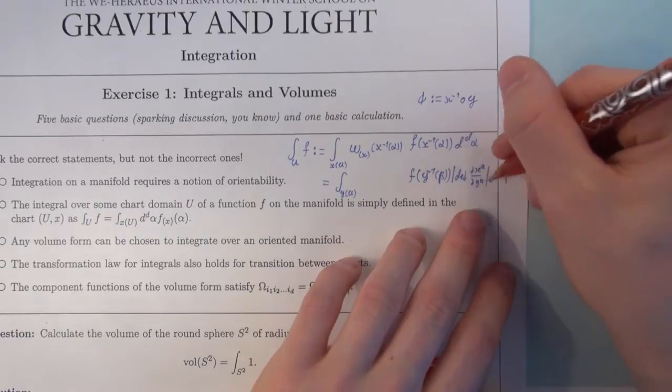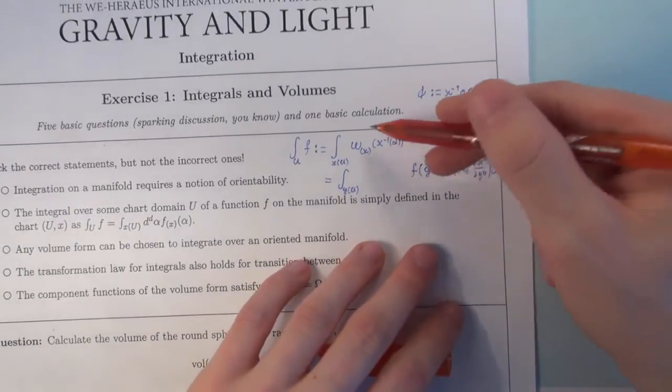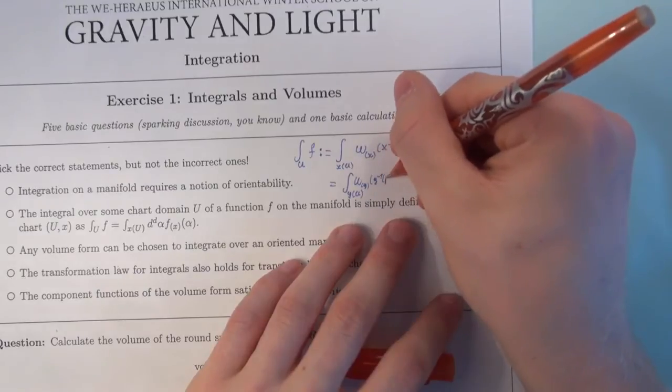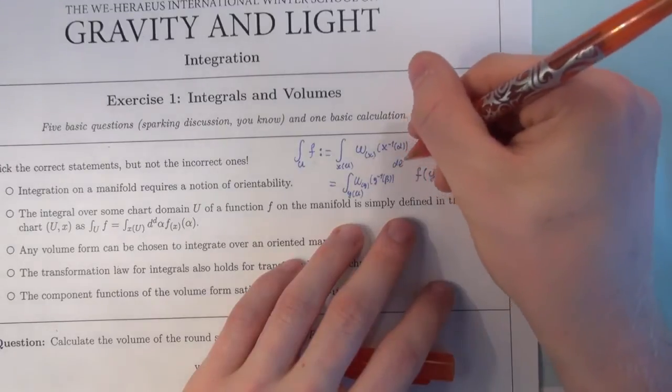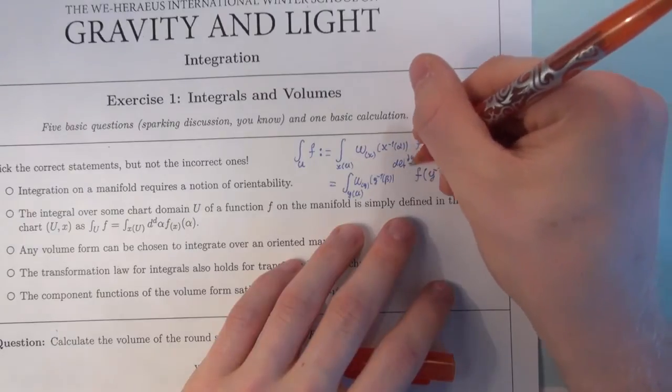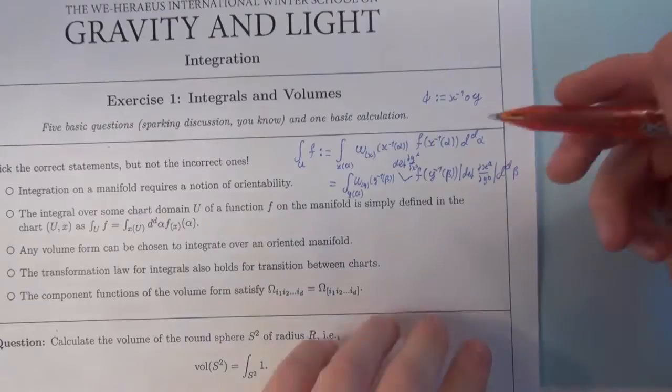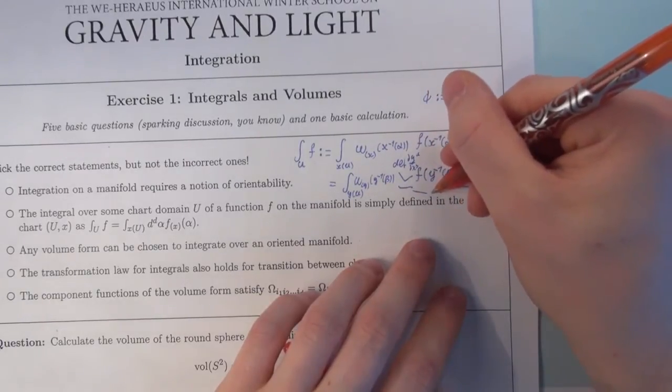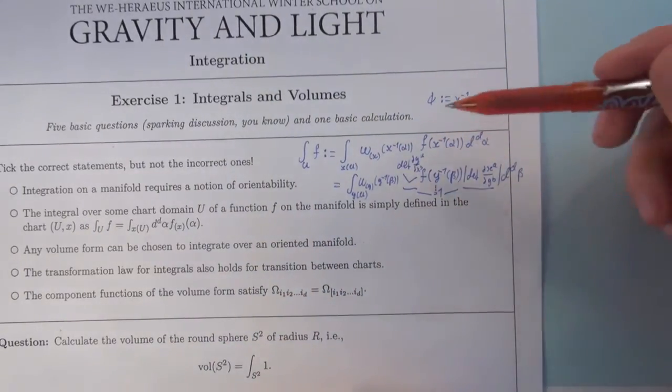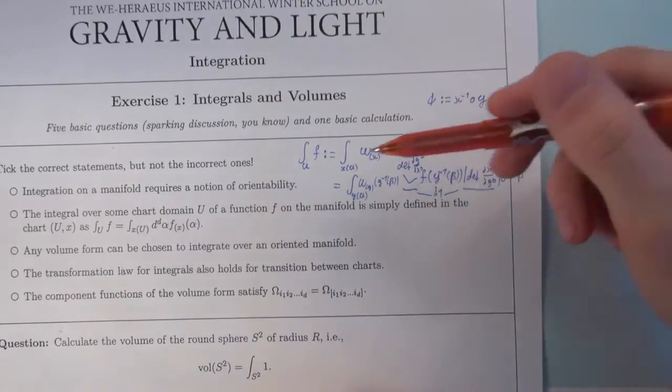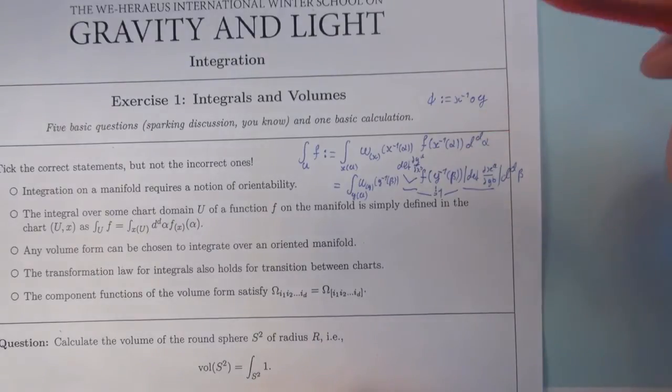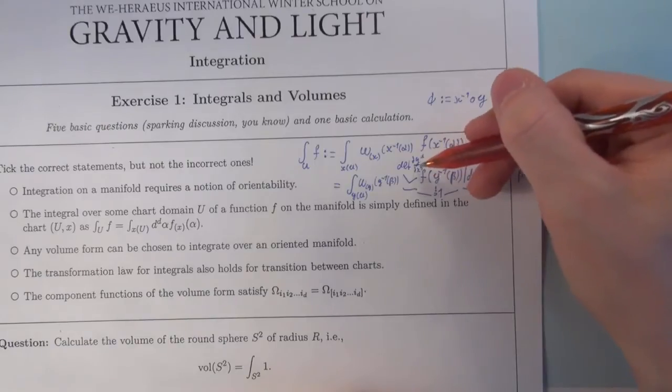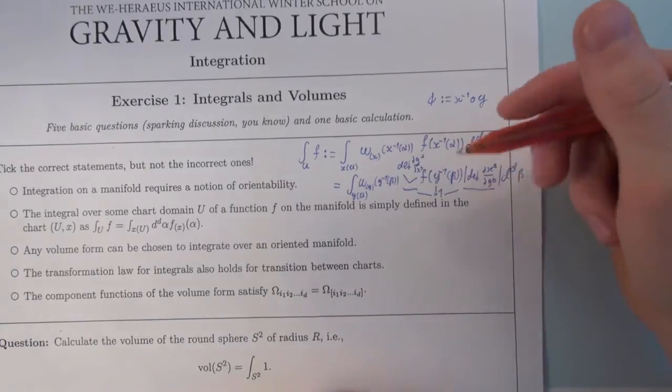Determinant del x a, del y b. And these objects you defined, they transform only with the determinant of del y a, del x b. This enters here. And you see, only if these two guys cancel each other to one, then the definition of integration of a function in a chart domain is independent of the chosen chart. This is exactly the notion of orientability we require. That those determinants that appear if you change between charts are always positive. So we can tick this option.